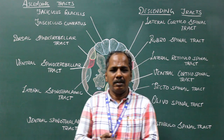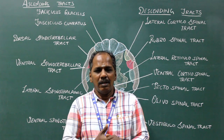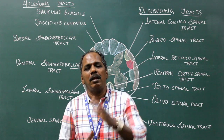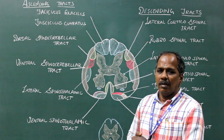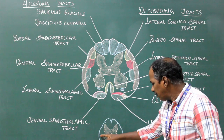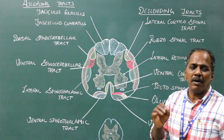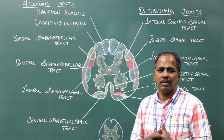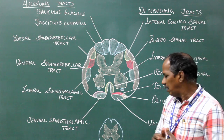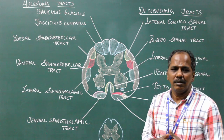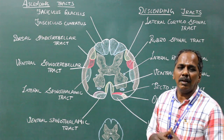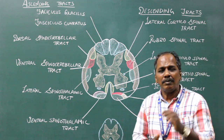Intersegmental tracts originate and end within the spinal cord. They exist in the ventral, lateral and posterior white columns. These tracts connect the neurons present between the intersegmental parts of the spinal cord.